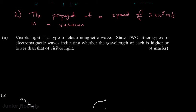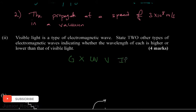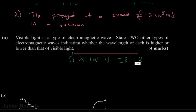The next part says visible light is a type of electromagnetic wave — state two other types, indicating whether the wavelength of each is higher or lower than that of visible light. Recalling the electromagnetic spectrum, we have gamma radiation, x-rays, ultraviolet, the visible region, infrared, and radio waves, with wavelength increasing to the right and frequency increasing to the left.